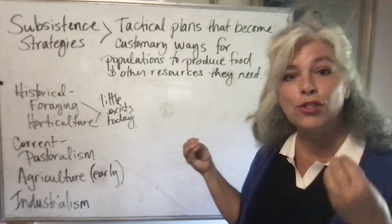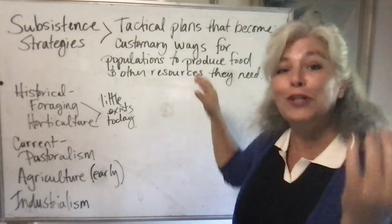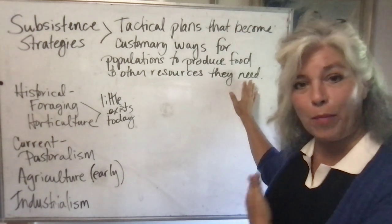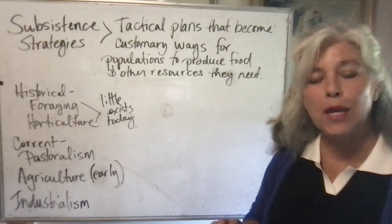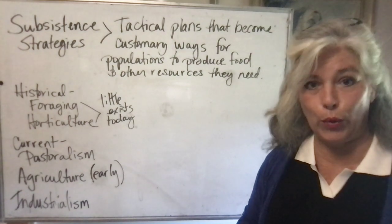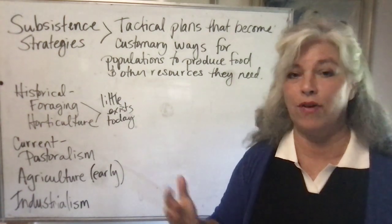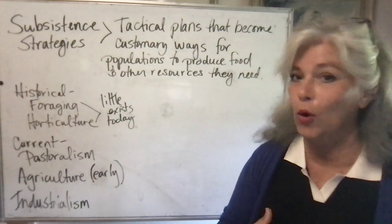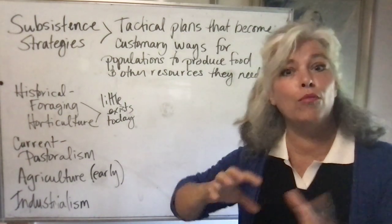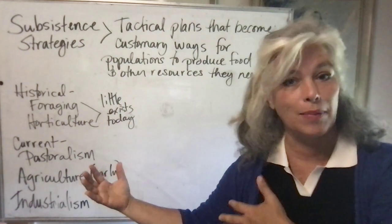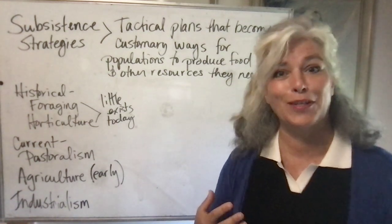A subsistence strategy is, in a nutshell, a food-getting strategy. It's about the tactics that people in society use to get food and other resources. For instance, if you need shelter to survive, what kind of shelter do you need? Do you need a hard shelter to protect you from a cold environment or harsh weather? Do you need a temporary shelter like a hut that you can move because you're nomadic?